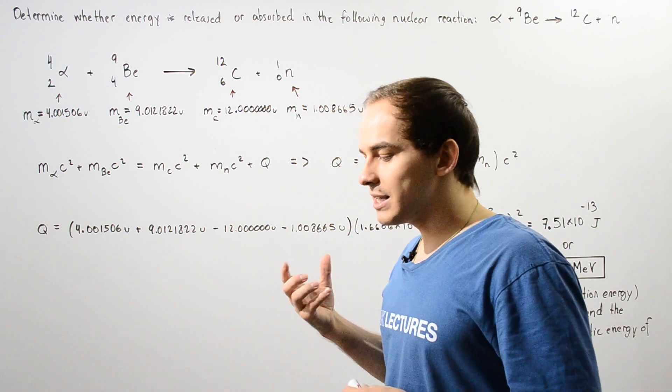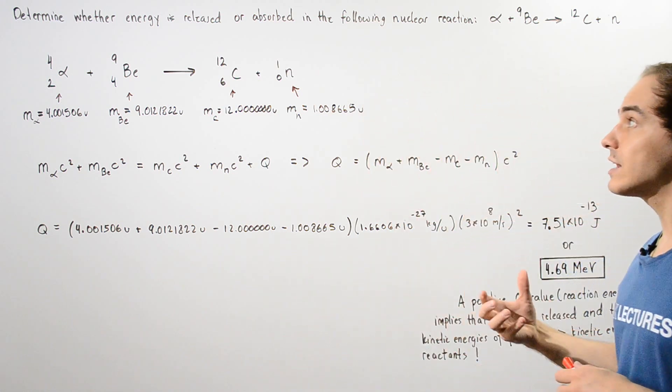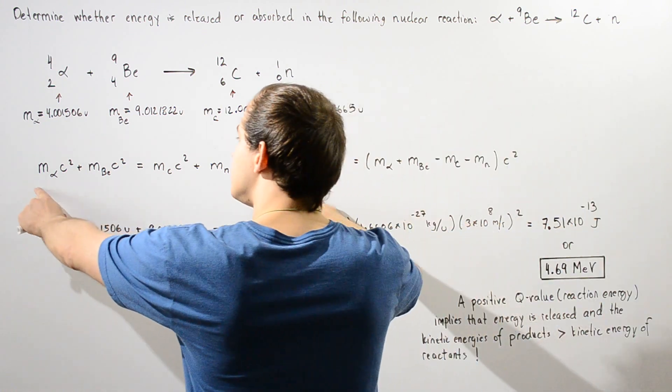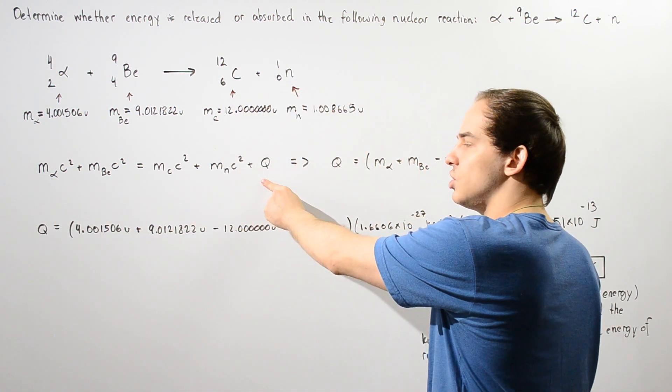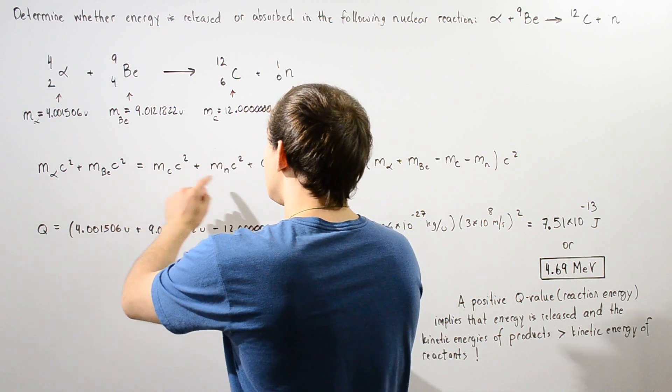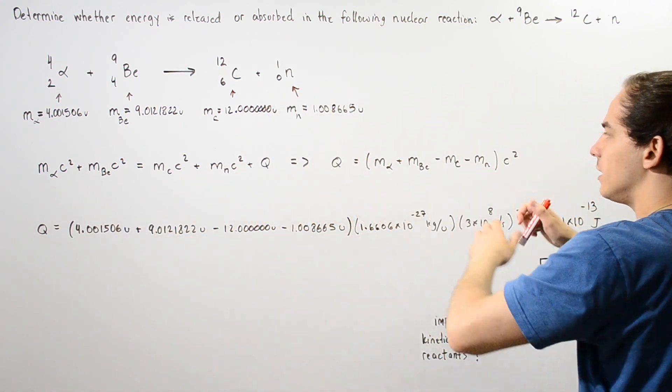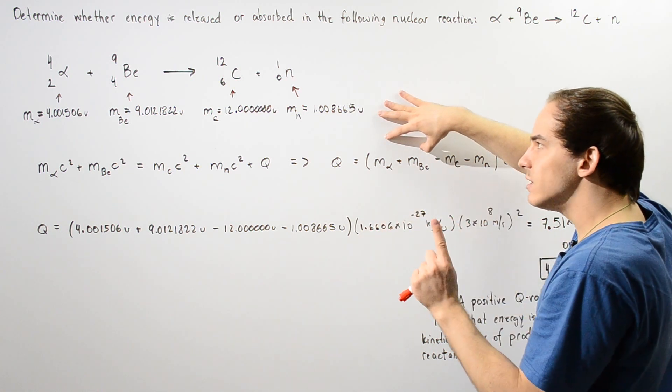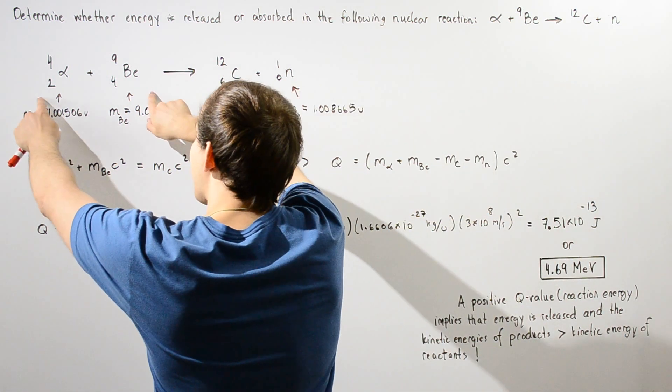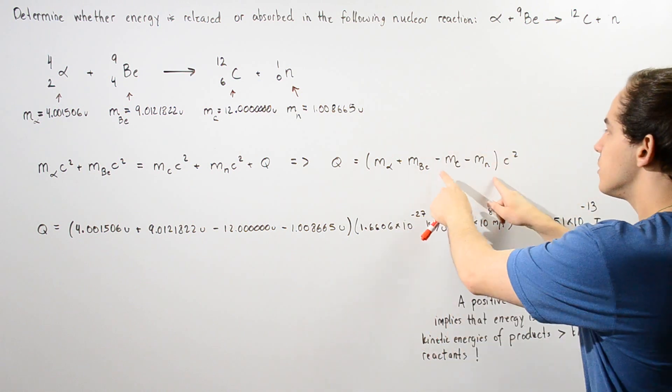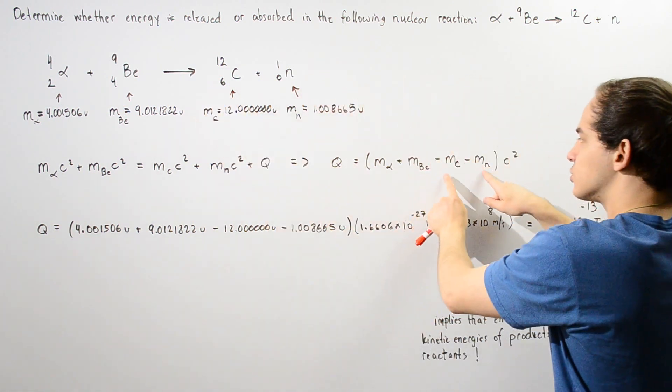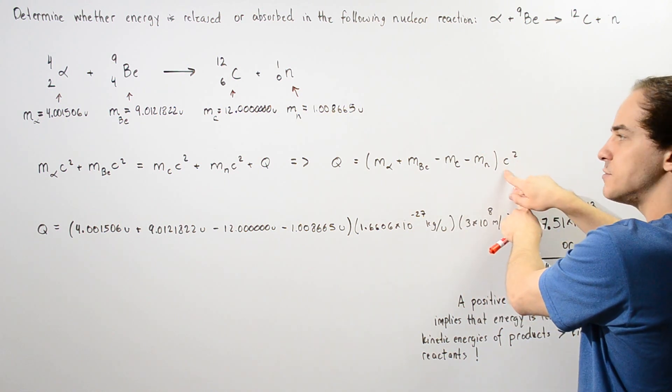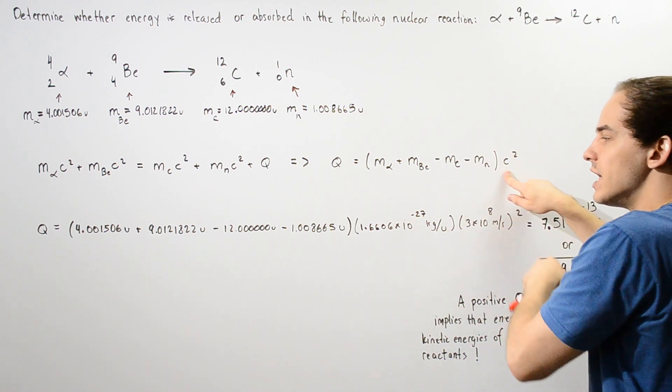To calculate if our reaction releases or absorbs energy, we use this equation to calculate the Q value. The sum of the masses in kilograms of our reactants minus the sum of the masses of our products, also in kilograms, multiplied by the square of the speed of light in a vacuum.